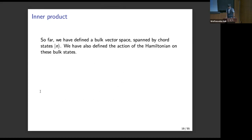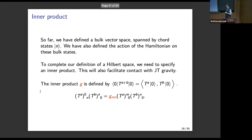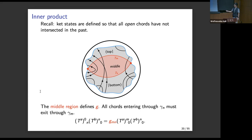So far I've only discussed a bulk vector space — a span of a bunch of vectors. To make it a Hilbert space, I need to specify the inner product. The inner product will help us make contact with JT gravity, and it's defined by viewing the transition amplitude as an overlap between states. More illuminating is to write this geometrically: any general chord diagram can be split into three regions — a bottom region defining a ket vector, a top region defining a bra vector, and a middle region defining the inner product. The rule is that all chords entering the bottom of the middle region must exit through the top. Using this definition, you can write down a recursion relation and in some cases solve it to obtain an explicit expression for the inner product.